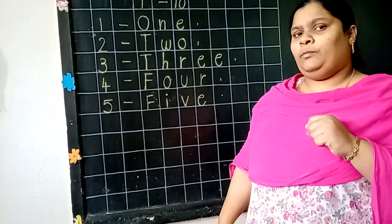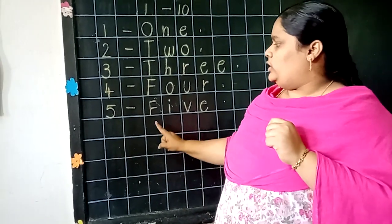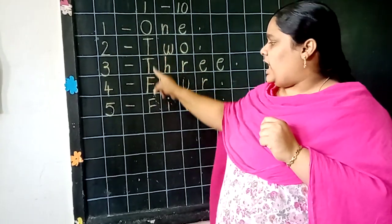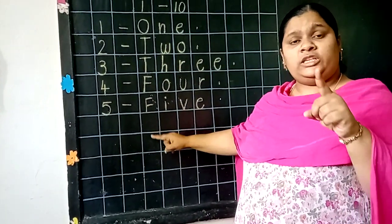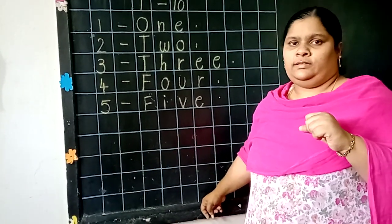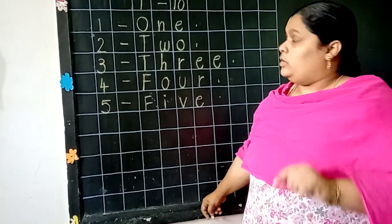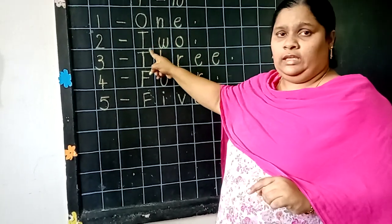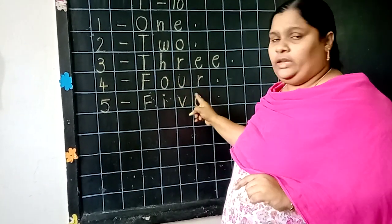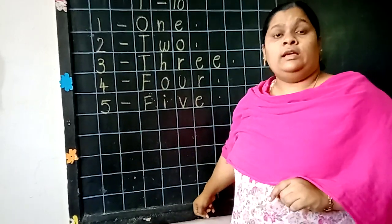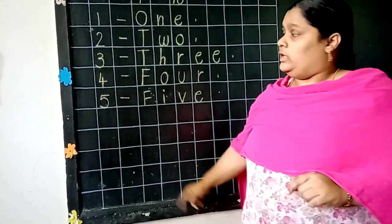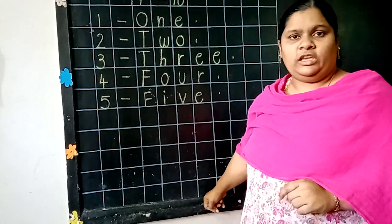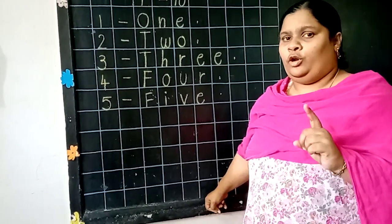Children, one more thing I am going to tell you. In Junior KG, while you are writing number names, you used small letters. But now, while you are starting, please start the number name with a capital letter only. At the starting, we should keep the capital letter. Ok, children? Please follow it.